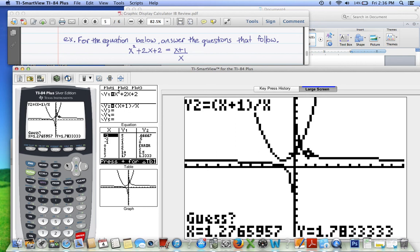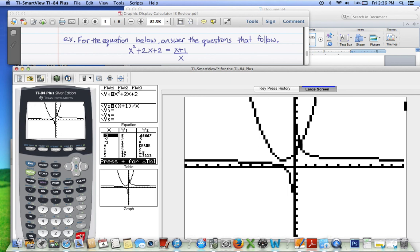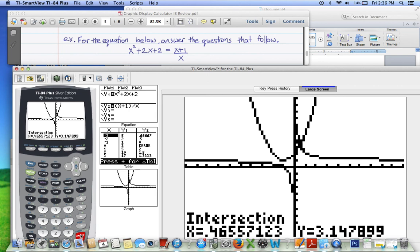Guess, we want to make sure it's as close as possible to the point of intersection that you're interested in, and you press enter. And it comes up with the point of intersection that you're looking for. It says here that x is 0.46557123.